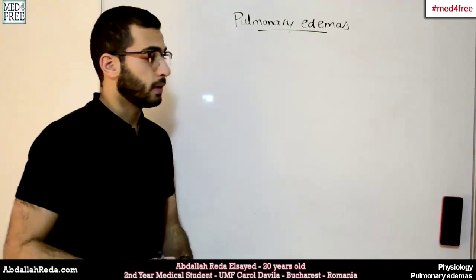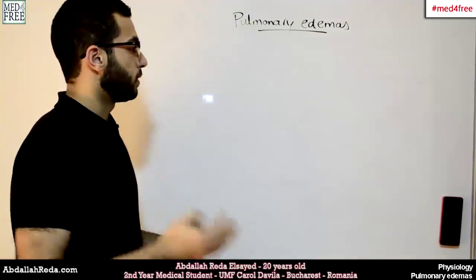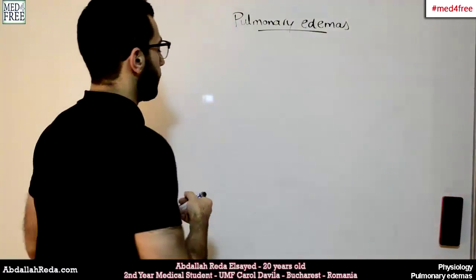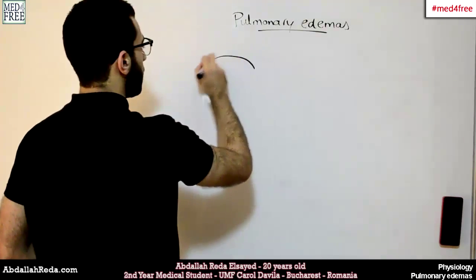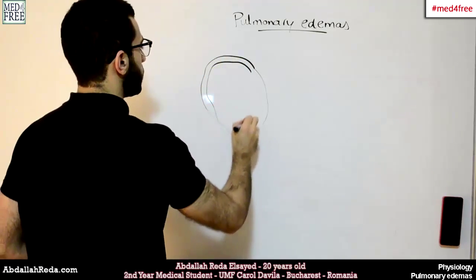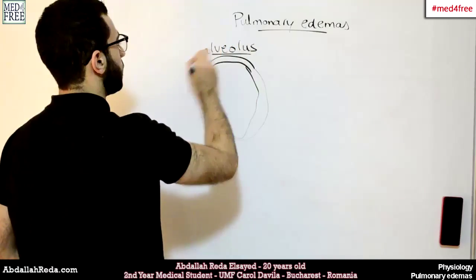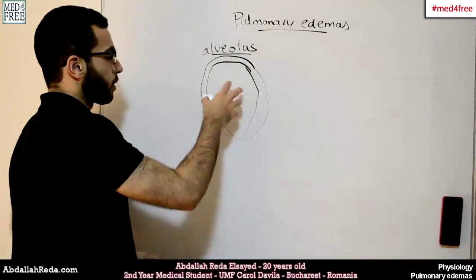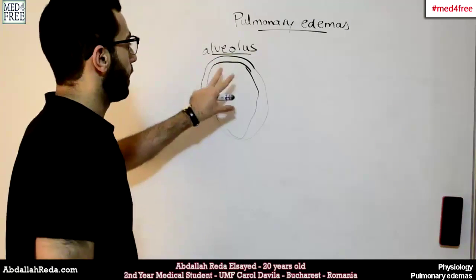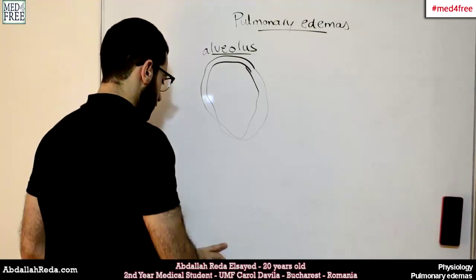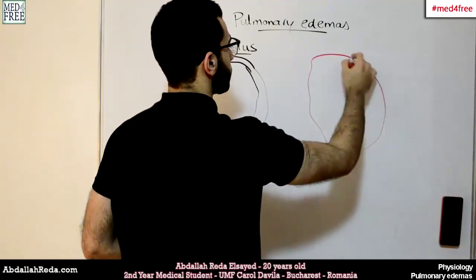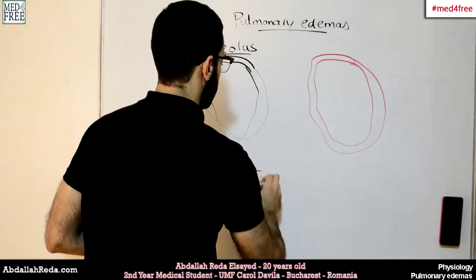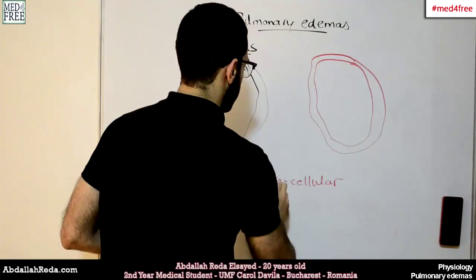Today we are going to talk about pulmonary edemas. As from last time, we know that edemas occur due to the accumulation of fluids in the extracellular space. Now if we look into the structure of the lung, we find that we have a compartment called the alveolus — singular, alveoli plural — which stores the air. These are the compartments where air is stored inside the lungs. On the other hand, we have capillaries, and around here is the extracellular interstitial space.